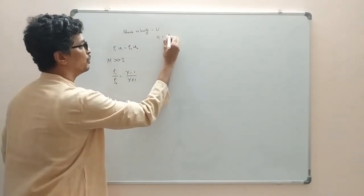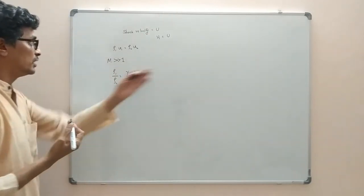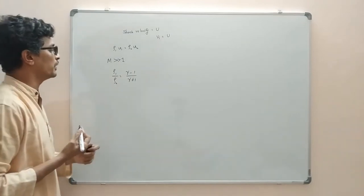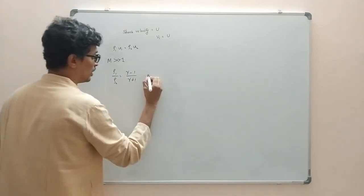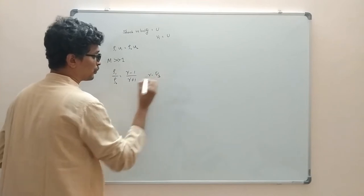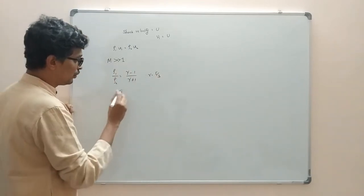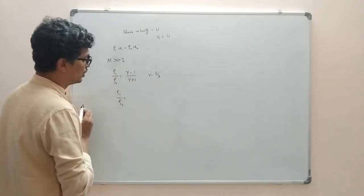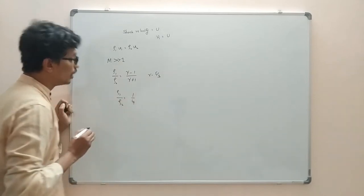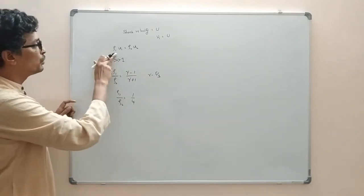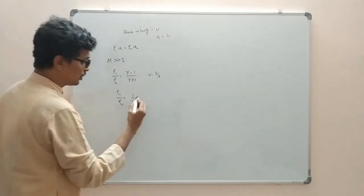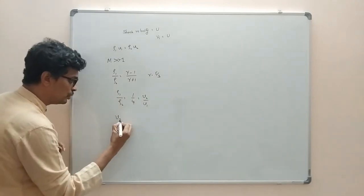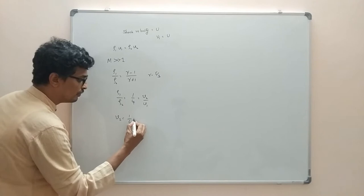V₁ is nothing but U — the velocity at which the upstream is moving towards the shock in the shock frame. For a fully ionized gas, γ = 5/3. When we substitute this, ρ₁/ρ₂ = 1/4. From the mass flux equation, ρ₁/ρ₂ = V₂/V₁, so V₂ = (1/4)V₁.